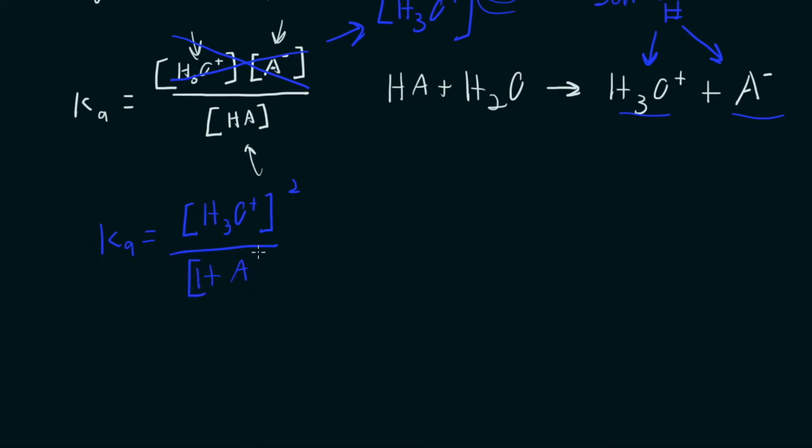And so now I can multiply both sides by that concentration of HA. We're just doing a little algebra here. And then I want to get rid of this square right here. So I'm going to square root both sides.